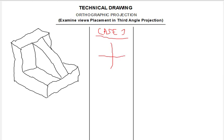For case one, the placement of the views goes like this: we'll have the front view in the third quadrant, we'll have the end view in the fourth quadrant, and then we'll have the plan in the second quadrant. This is the first case. Now let's look at case two.